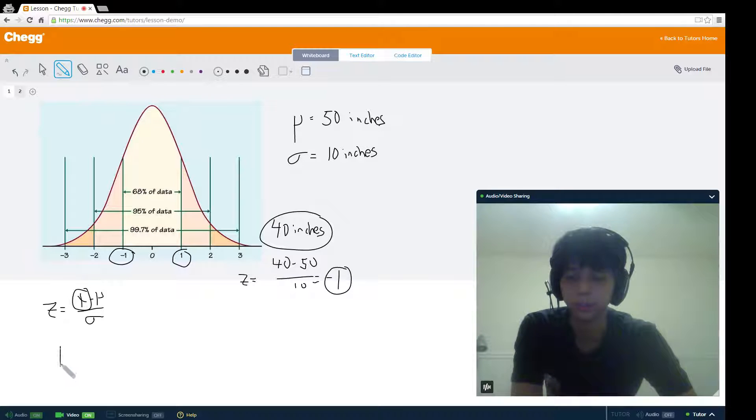Your z is going to be 1 and it equals your x which you don't know yet minus your mean which is 50 in this case over your standard deviation of 10. And so, this ends up being 60. 60 inches.